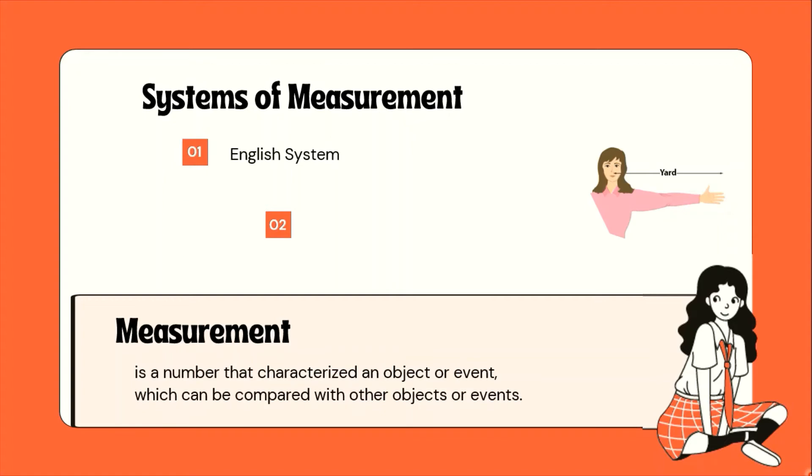However, sa English system, iyong tatlong yun ay may specific na katumbas na sukat. Hindi siya depende na sa body parts. English system of measurement is widely used until the 1800s by the USA and the UK. It has basic units for certain quantities. Dito sa Philippines, gumagamit din tayo ng English system of measurement dahil tayo ay nasa kapuwans ng mga Americans.